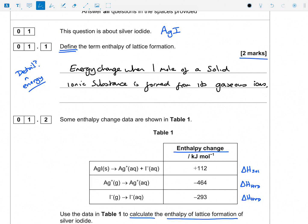Definitions and equations are great. I'm going to put the equation in here anyway for AgI, so this would be Ag+ gas plus I- gas goes to AgI solid. That would be the equation for it, but literally the definition is just the equation in words: one mole of a solid ionic substance formed from its gaseous ions.